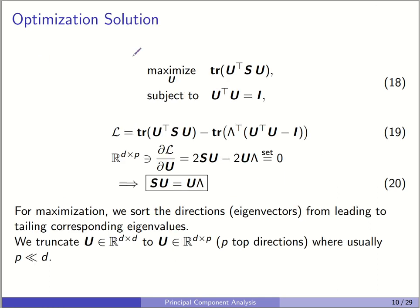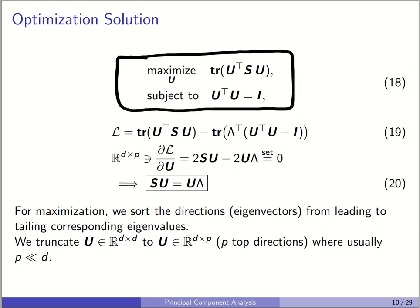Taking the derivative of the Lagrangian with respect to U and setting it to zero: the derivative of the first term (a quadratic form) is 2SU, and the derivative of the second term is 2U*lambda. This derivative is D by P, because when taking the derivative of a scalar with respect to a D-by-P matrix, each of the D*P elements contributes. Setting the derivative to zero and rearranging gives S*U = U*lambda, which is exactly eigenvalue decomposition.